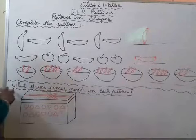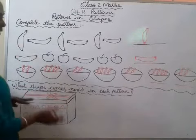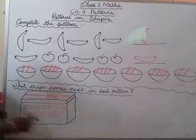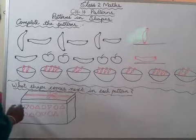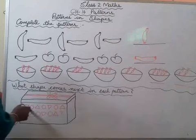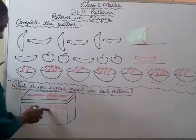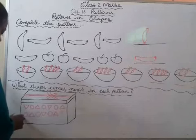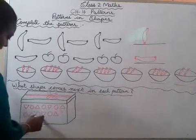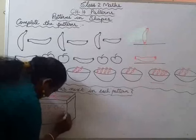What shape comes next in each pattern? This is a gift box. Gift box ke andar — first one, triangle diya hai, ulta wala triangle. Then circle, then circle, then again ulta wala triangle, then circle, then straight triangle. Next circle, straight triangle, next circle, ulta wala triangle, circle, sida triangle. What will be the next? Circle. Next one will be circle.